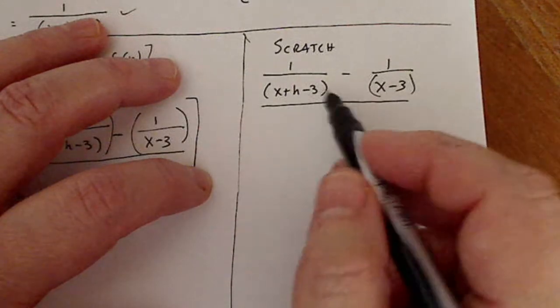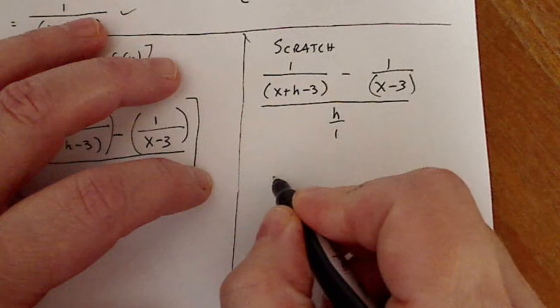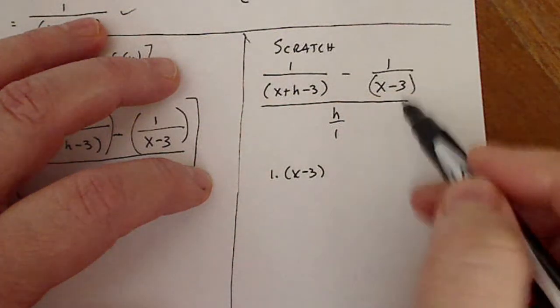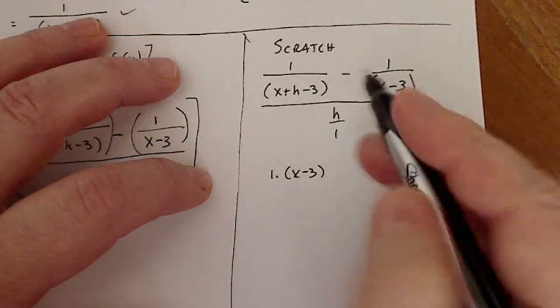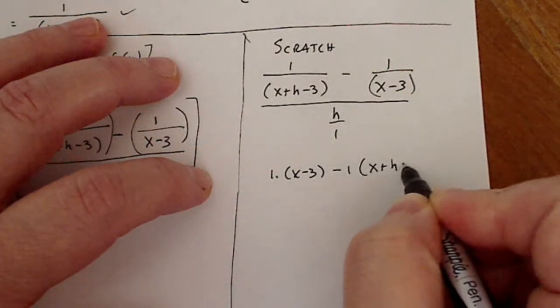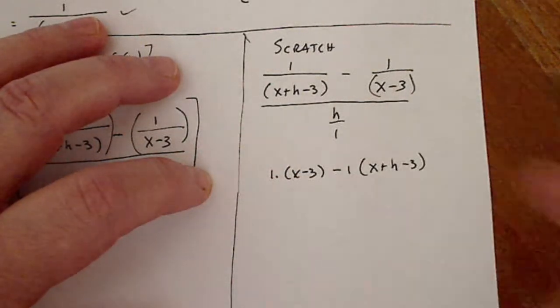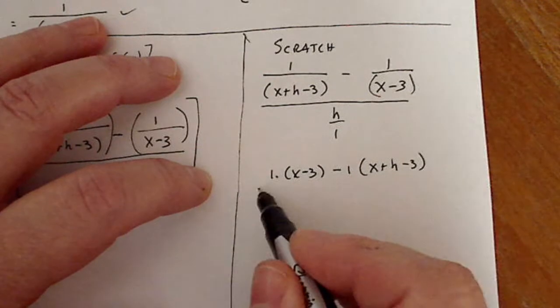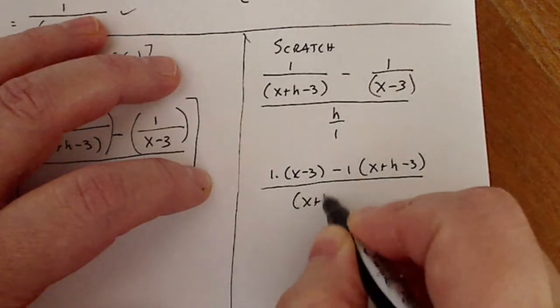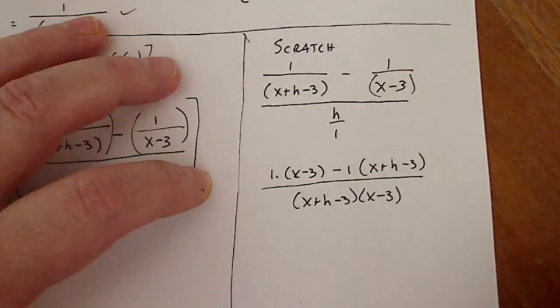So to find a common denominator here, I have to multiply top and bottom here by x minus three. I have to multiply top and bottom here by x plus h minus three. So minus one times x plus h minus three. These are not the same numbers because of that h in there and there's no h here. And then that's over the common denominator, x plus h minus three times x minus three.